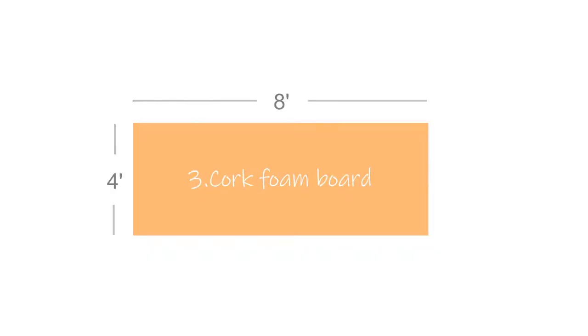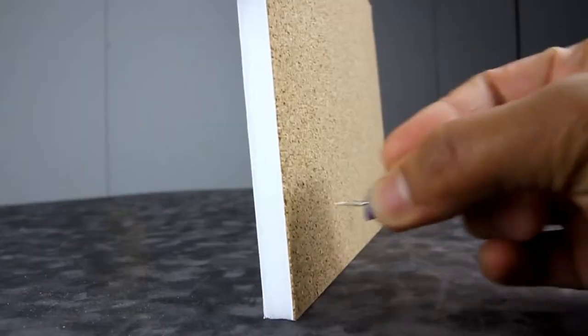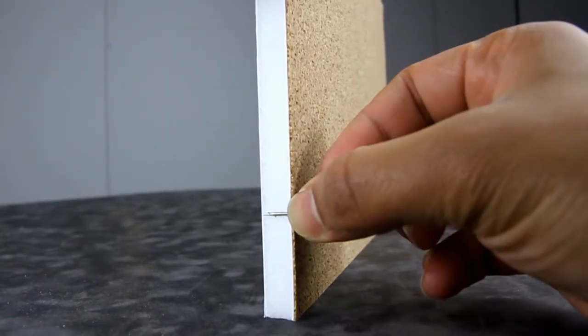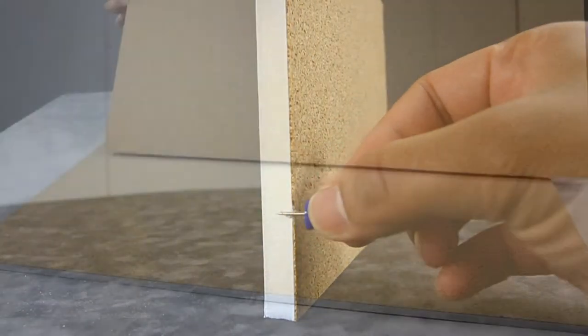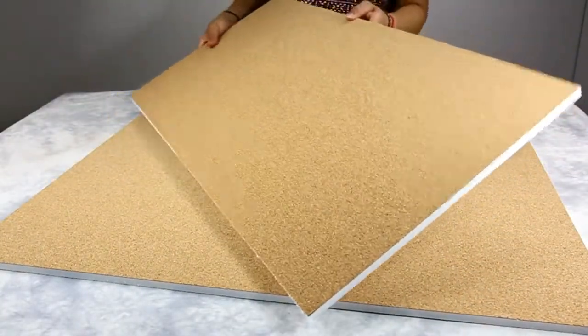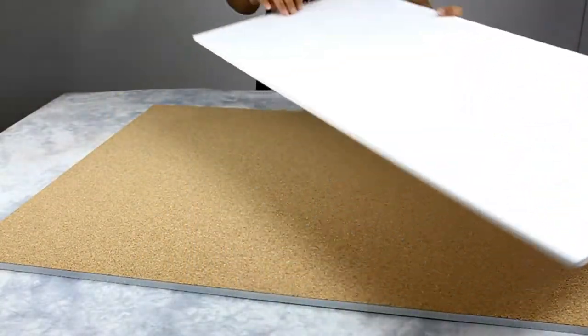Cork foam board are available 4 by 8 feet and half an inch thickness. One side consists of cork and the other side is composed of white foam board.